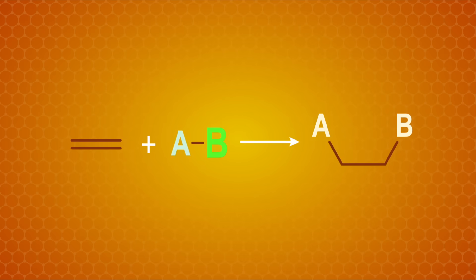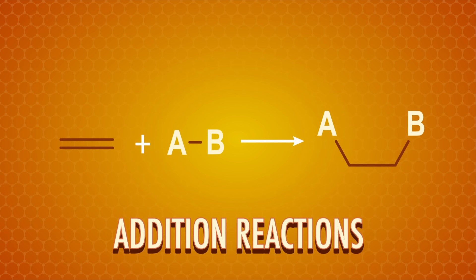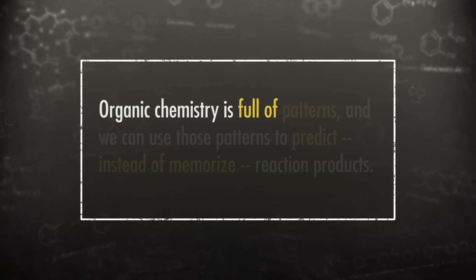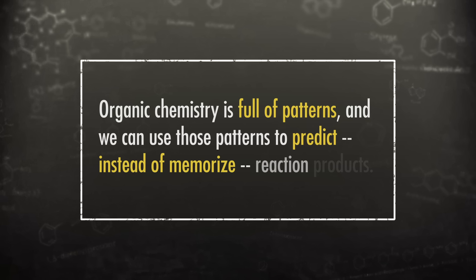Over the past few episodes, we've been doing reactions with alkenes that follow the same general pattern. Alkenes are nucleophilic and can attack electrophiles, so the pi bond gets broken and sigma bonds form. Two groups get added to the former alkene, one to each carbon on either side of the double bond. Organic chemistry is full of patterns.